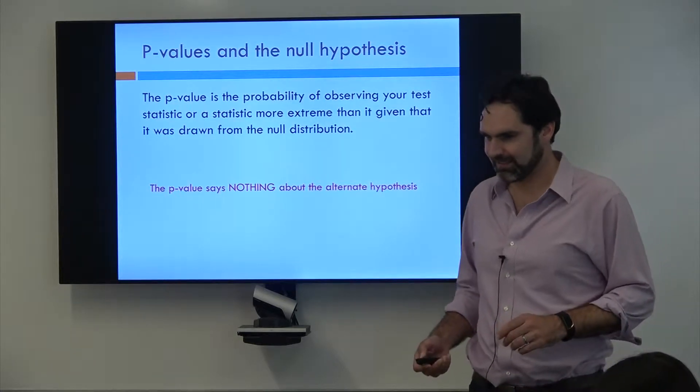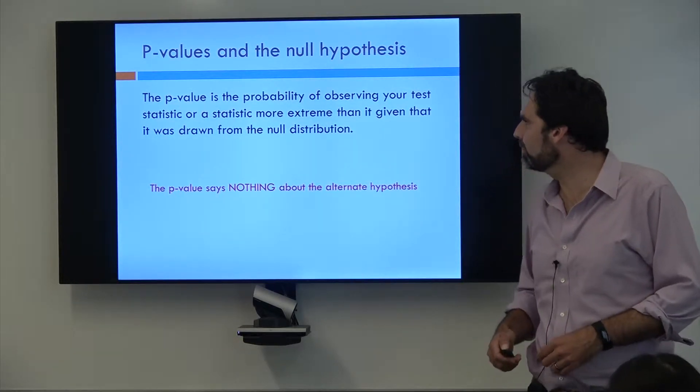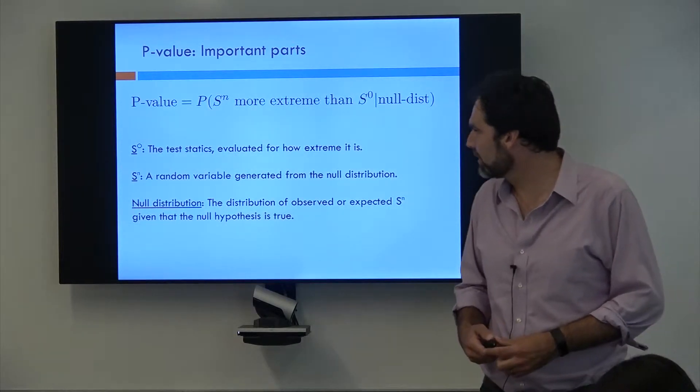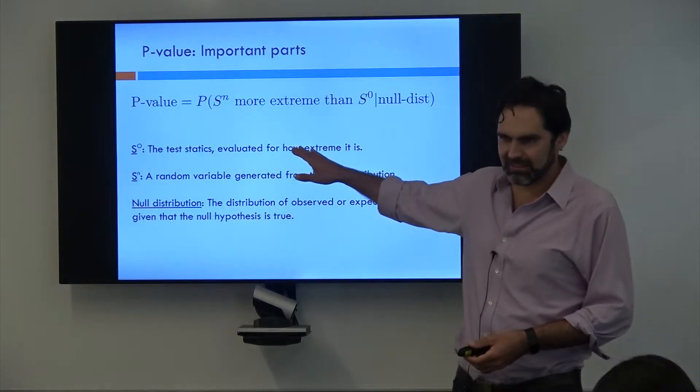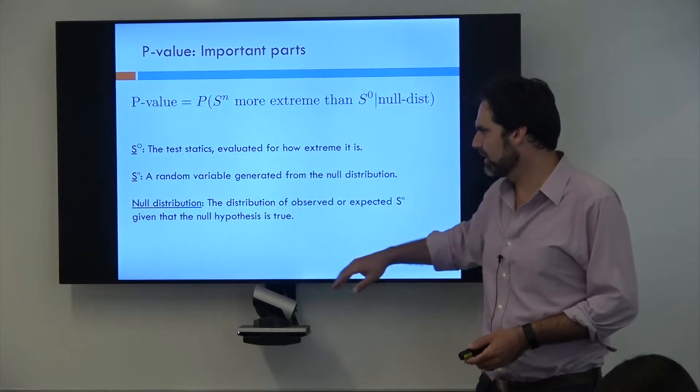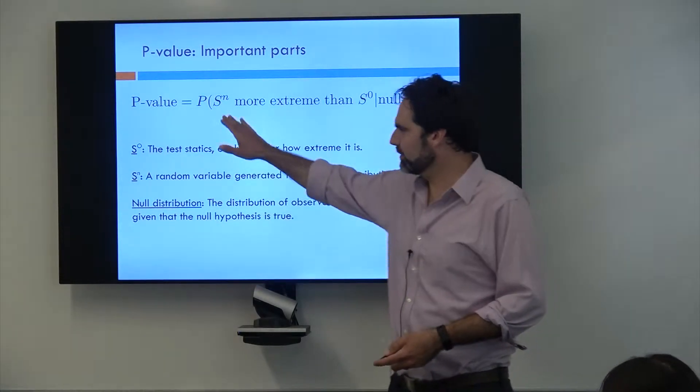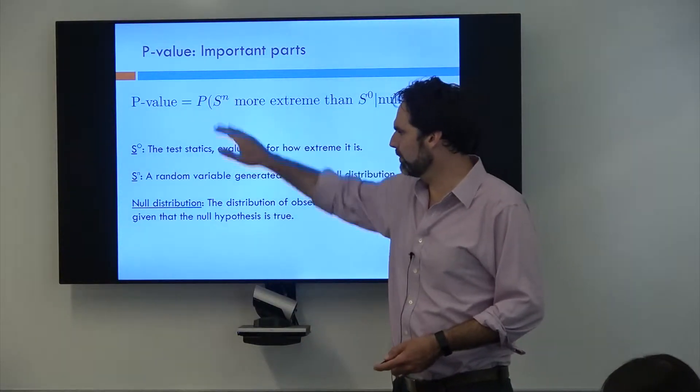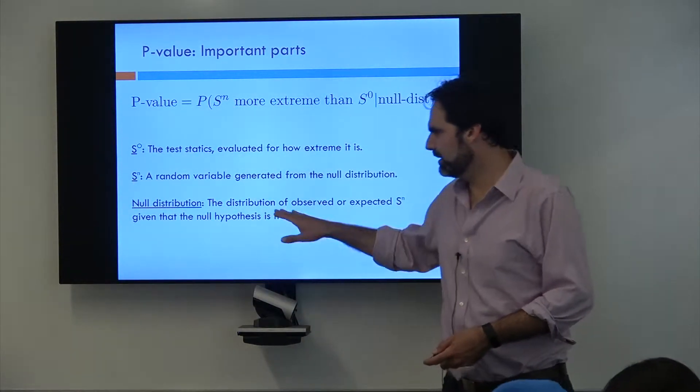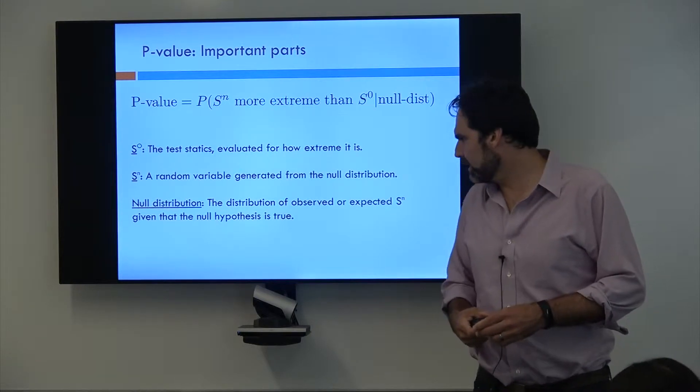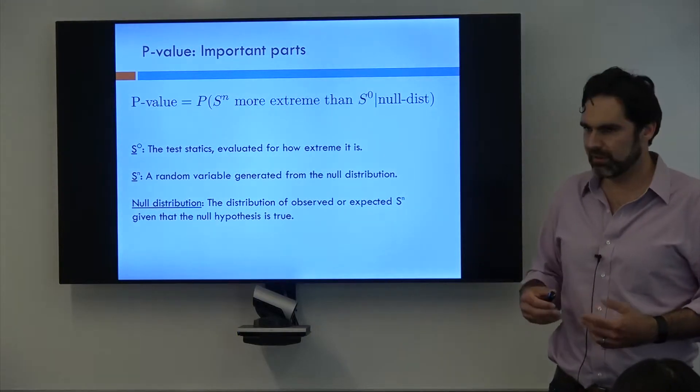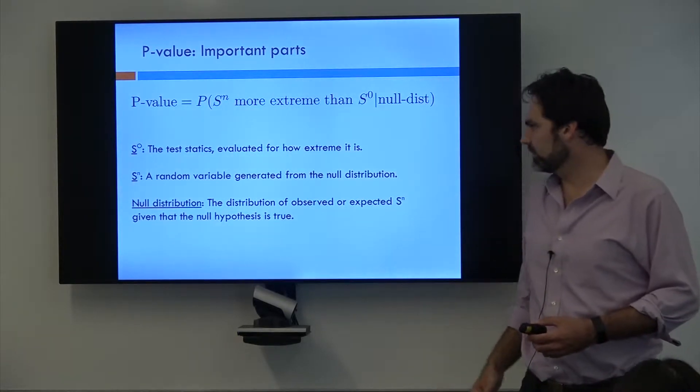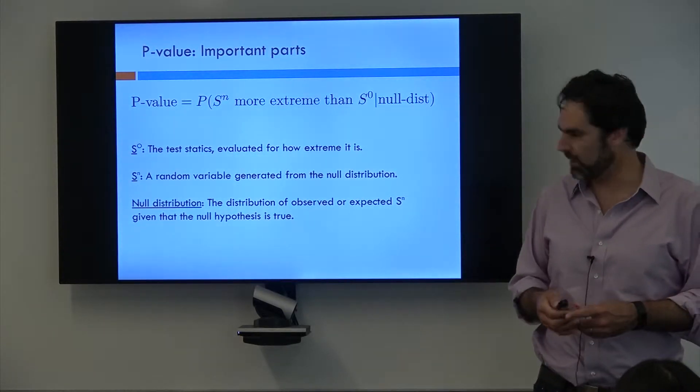We're going to revisit this shortly. So p-value, important parts: one is your test statistic, the thing you're calculating your p-value on. The other is some random variable that's going to be drawn and you're interested in the probability of that random variable. And then your null distribution - it's either your observed or expected statistics under the null hypothesis.